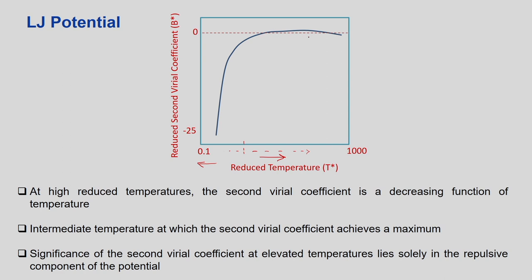As we go to higher and higher temperature — or bring molecules close together — the potential rises. If we keep increasing temperature, the reduced second virial coefficient becomes nearly independent of temperature, appearing almost horizontal with respect to temperature. At high reduced temperature, the second virial coefficient is a decreasing function of temperature. At intermediate temperature, the coefficient achieves a maximum before dropping and then becoming horizontal.